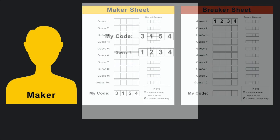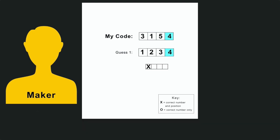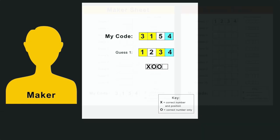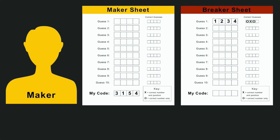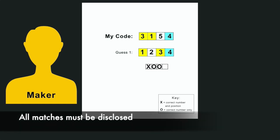First, the code maker looks to see if any digits of the guess matched both the correct number and correct position in their code. For example, if the four in the guess was the correct number in the correct position, they would indicate this with an X. Next, they check which numbers from the guess are the correct number but not in the correct position — these are indicated with an O. The code maker places these symbols in the correct guesses boxes next to that guess. The code maker does not have to put the symbols in any particular order, but must accurately indicate all matching elements.